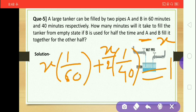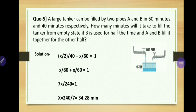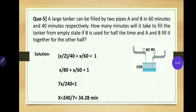So the equation is: x/60 plus x/80 equals 1 — wait, more precisely, x/60 plus (x/2)/40 equals 1. Simplifying: x/60 plus x/80 equals 1. Solving gives x equals 240/7, which is approximately 34.28 minutes. So the tank will be filled in about 34.28 minutes if pipe B is open for only half the total time.